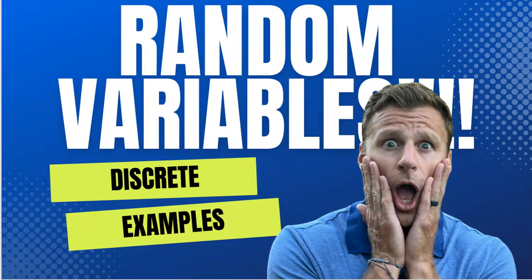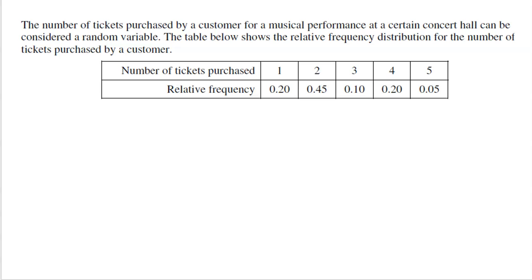Welcome to Random Variables. In this video, we're going to talk about some discrete random variable examples. We're going to look at three examples where the probability distribution is given to us, then we're going to look at a fourth example where we actually have to build the probability distribution.